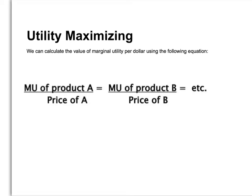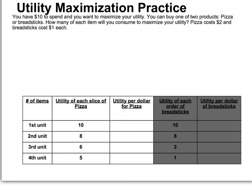Once you calculate MU of A divided by the price of A, the larger the number, the more utility per dollar you receive. You want the most utility per dollar for each item you consume. Looking at this chart, say you have $10 to spend and want to maximize your utility. You can buy one of two products or a combination — pizza or breadsticks — and you're looking for each additional unit to maximize your utility until you've spent $10. Pizza costs $2 and breadsticks cost $1, which will be the denominator in each equation.